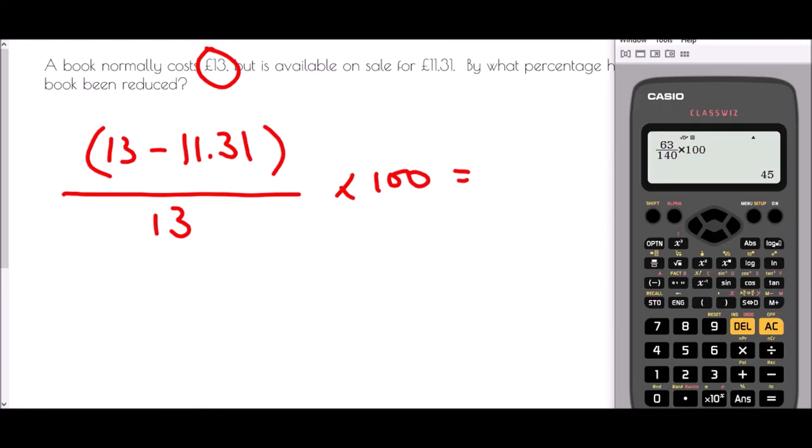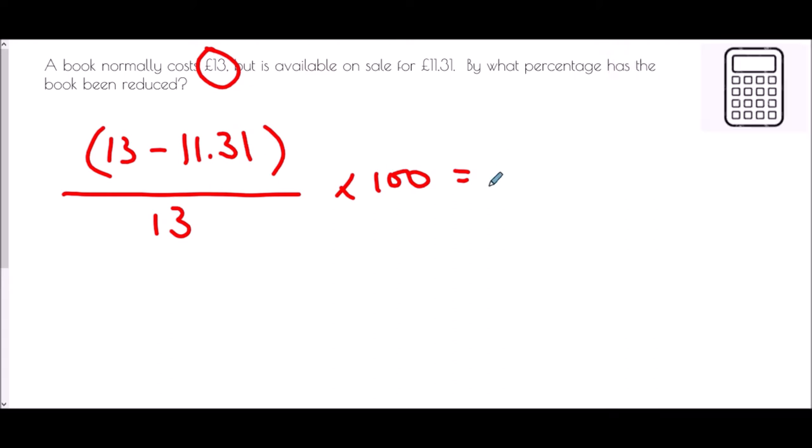So again we just grab our calculator and in our fraction I'm going to do 13 take away 11.31. That is going to be the change that has happened and divided by the original amount and multiply it by 100. And when I do that straight away I get an answer of 13%. So the reduction was 13%.